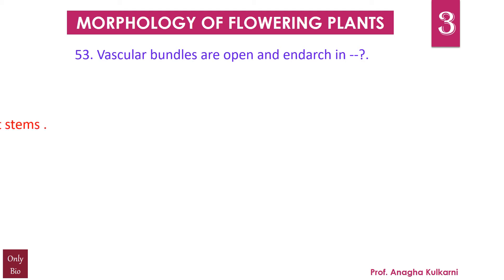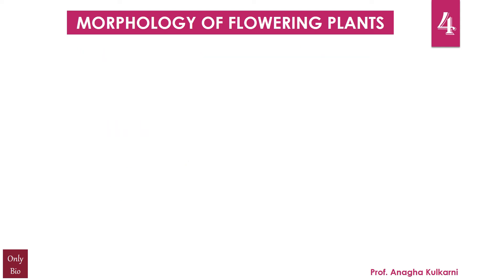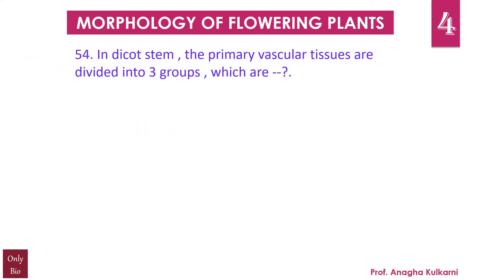Question number 53: Vascular bundles are open and in — a) dicot stems, b) monocot stems, c) roots, d) leaves. The correct answer for this question is a) dicot stems. So the vascular bundles are open and in dicot stems.